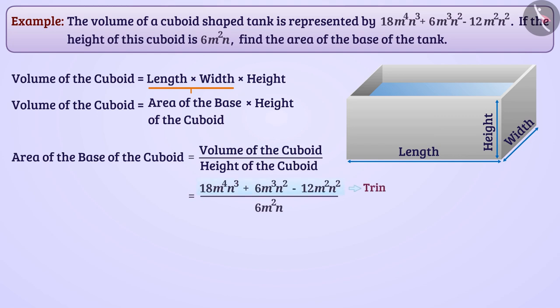Here, we have to divide a trinomial by a monomial. Can you tell me how to do it? Absolutely right! We can divide each term of the trinomial by monomial. Then, by the method of cancellation, we can find the quotient of each term separately. In this way, we get the area of the base of the cuboid as 3m squared n squared plus mn minus 2n.